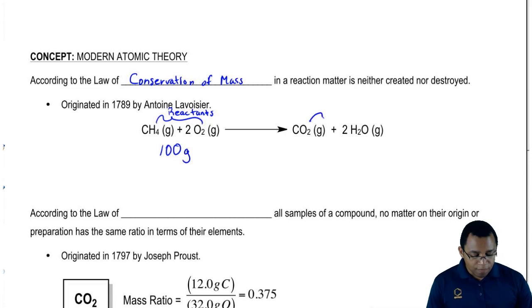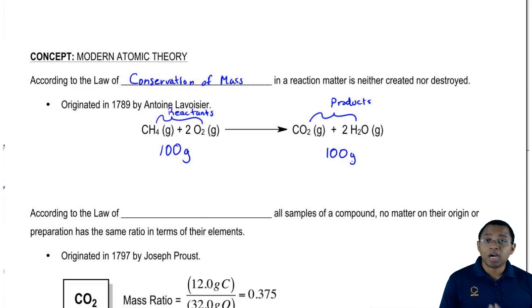At the end of our reaction, we form products. At the end of the reaction, we should still end up with 100 grams.